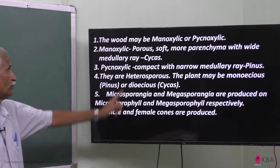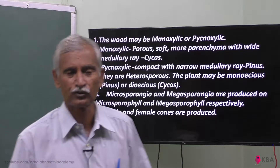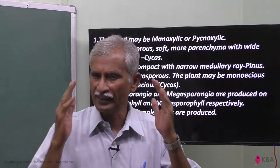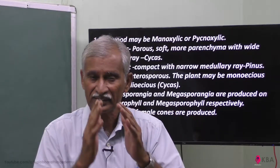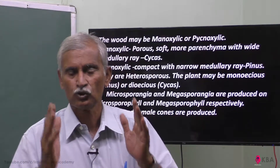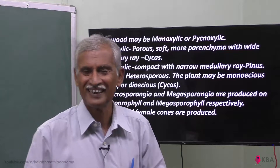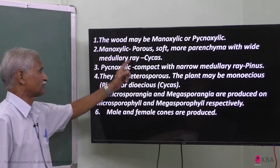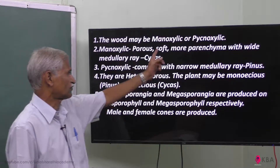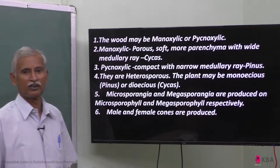The wood may be manoxylic or pycnoxylic. Manoxylic wood is very mildly developed, with parenchyma tissue in between. So parenchyma is abundant, the wood is not hard — it is very soft wood. Manoxylic wood is porous, soft, with more parenchyma and wide medullary rays.